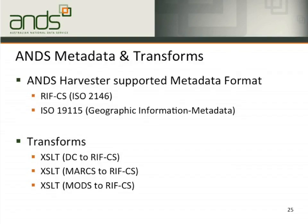ANTs supports two metadata formats: RIF-CS, and ISO 19115 which is the geographical information metadata format. If your institutional repository uses other formats such as Dublin Core, MODS, MARC, or others, it requires crosswalking to RIF-CS. You will need to write XSLT to translate from other formats to RIF-CS. However, some ANTs projects have already written XSLT translations, so before writing new translations please talk to our BAs — we may be able to give you an existing one to modify or adopt, saving your time.